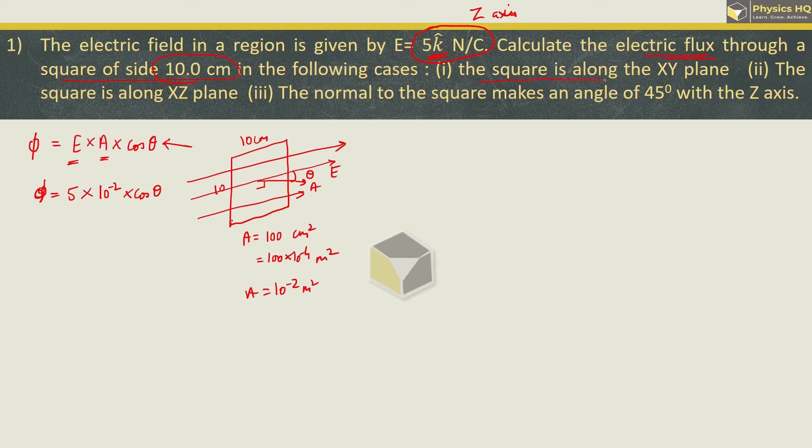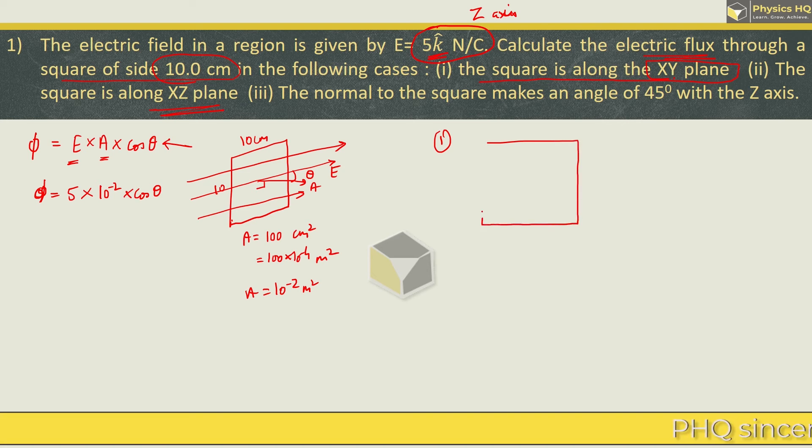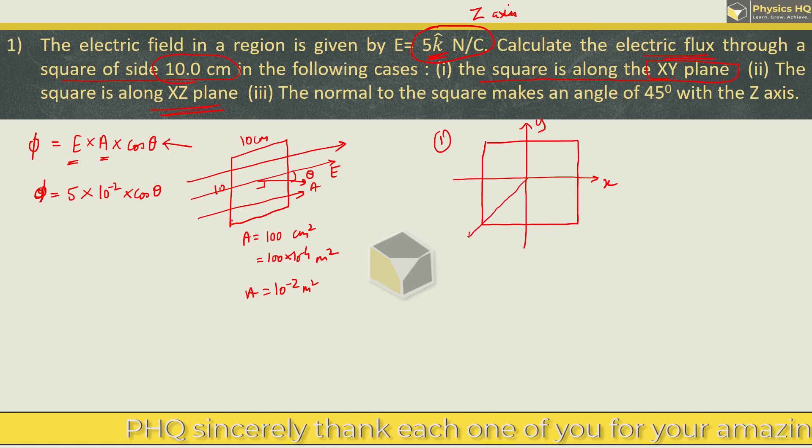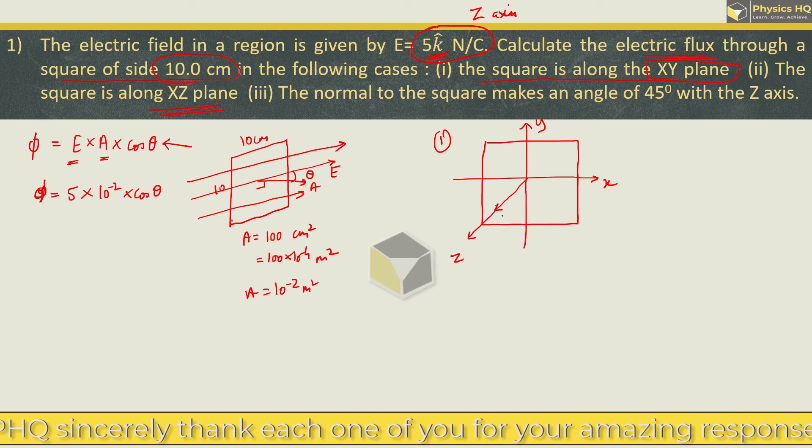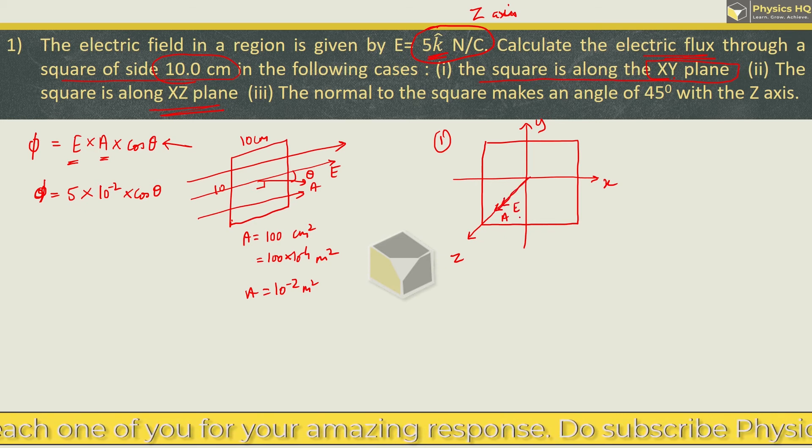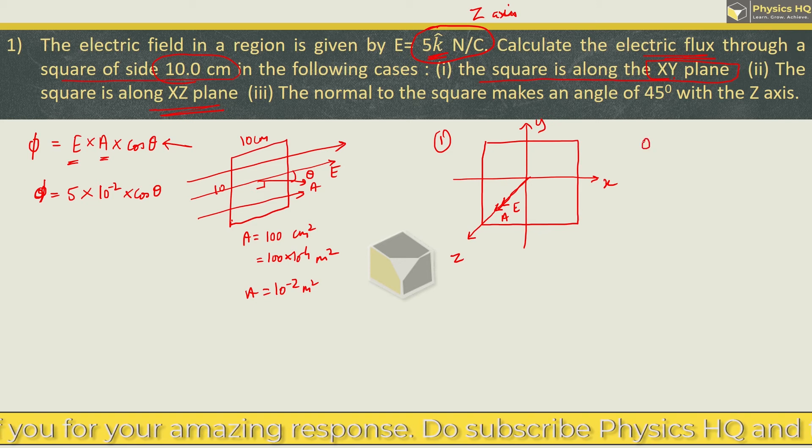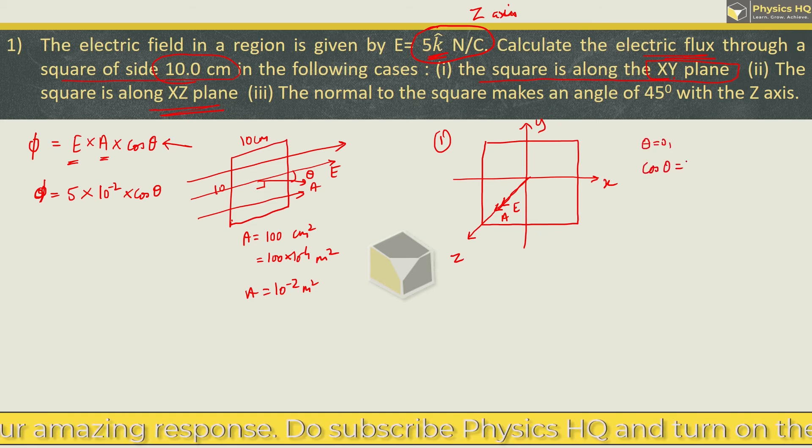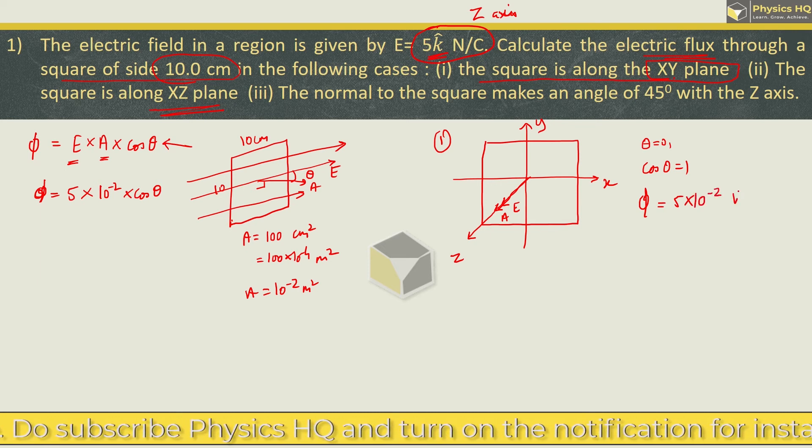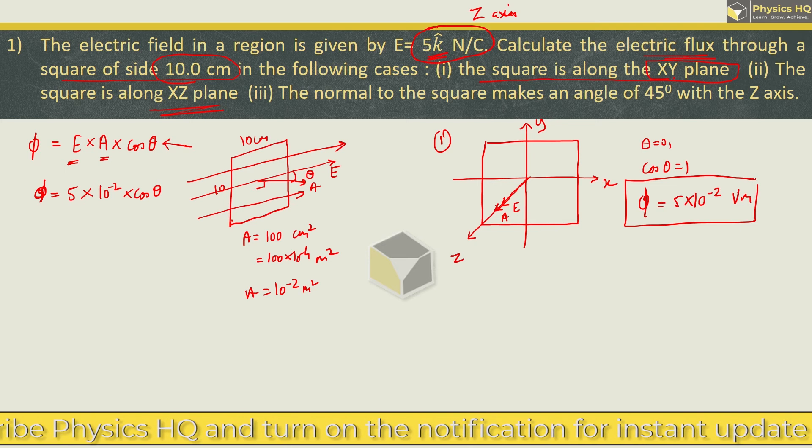Now, in the first case, they are saying that this square is along the XY plane. Now let us say that this plane is along the XY axis, so this is vertical axis and this is horizontal axis. Now, what do we do for area vector? We make it perpendicular, so it is already along the XY axis, and the electric field also is directed along the Z axis, so the angle is 0. So cos of 0 will be 1, so flux will be 5 into 10 raise to minus 2 volt meter.